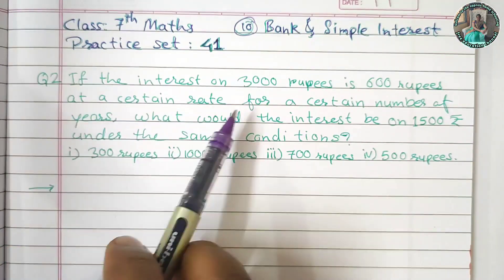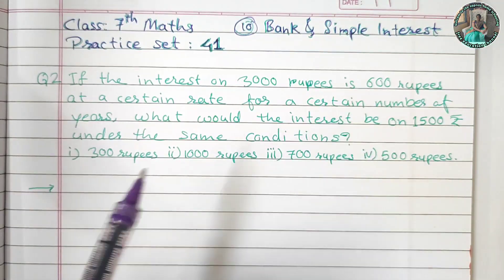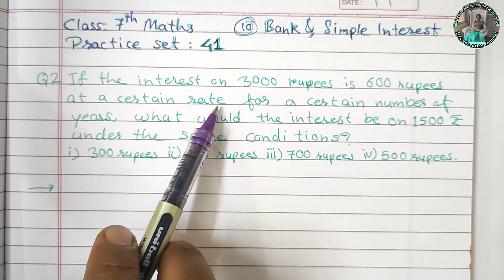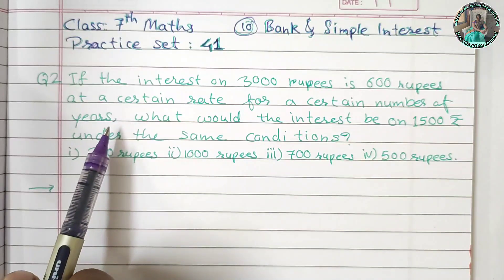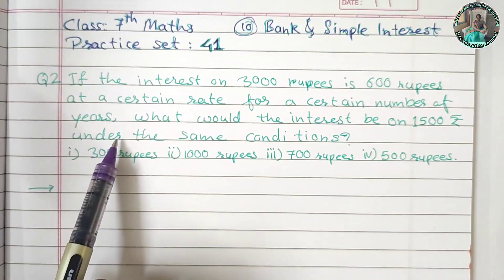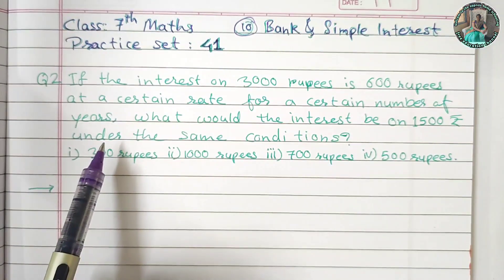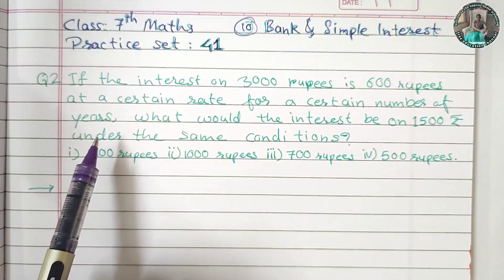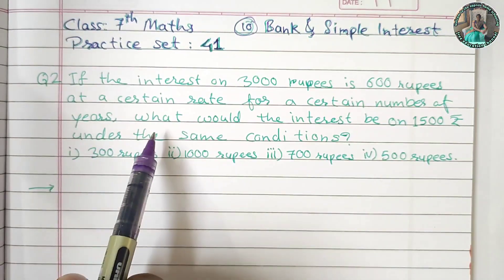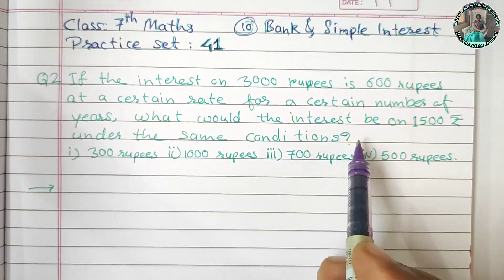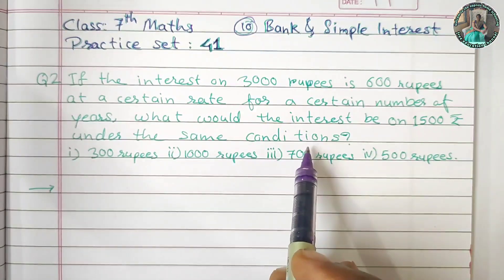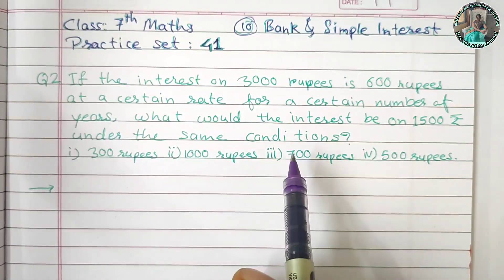If the interest on Rs. 3,000 is Rs. 600 at a certain rate for a certain number of years, what would the interest be on Rs. 1,500 under the same conditions?